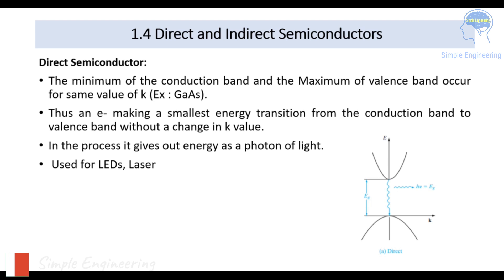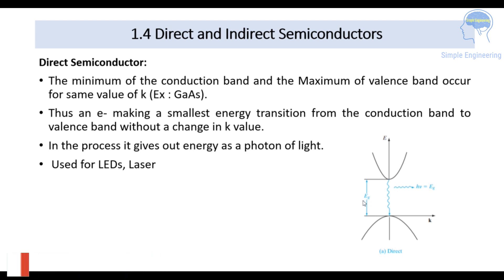This transition from the conduction band to the valence band gives out energy in the form of a photon of light, so direct semiconductors are used for LEDs and lasers. As shown in the diagram with energy gap Eg, the transition from the conduction band back to the valence band takes place without any change in k. During this process, emission of a photon occurs, denoted as h*nu, which equals the energy gap.